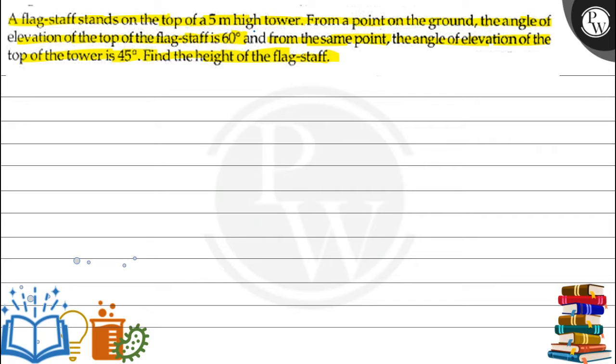So, a 5 meter high tower with a flagstaff on top. From a point on the ground, the angle of elevation of the top of the flagstaff is 60 degrees, and from the same point, the angle of elevation of the top of the tower is 45 degrees. So, first of all, let's talk about key concepts.